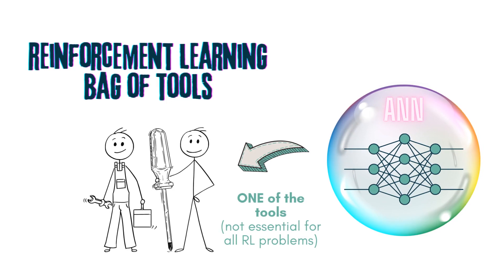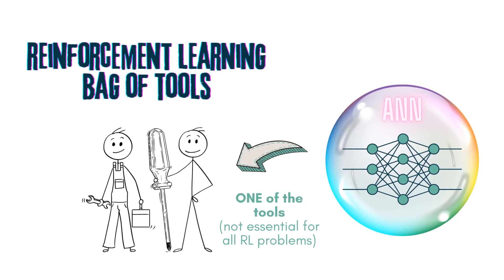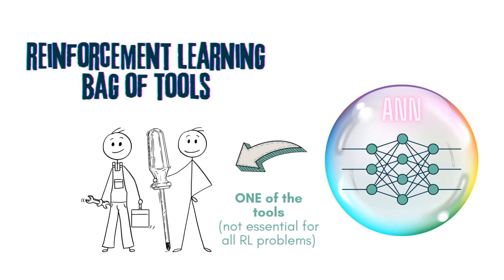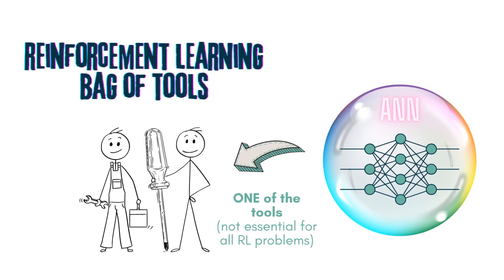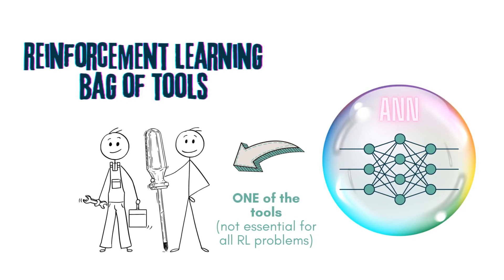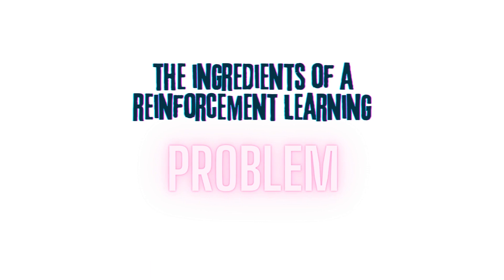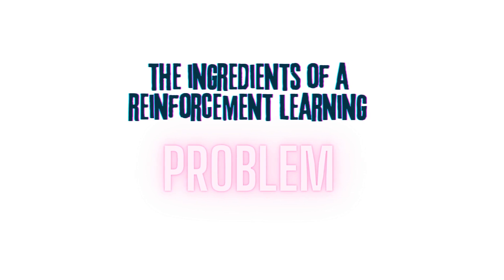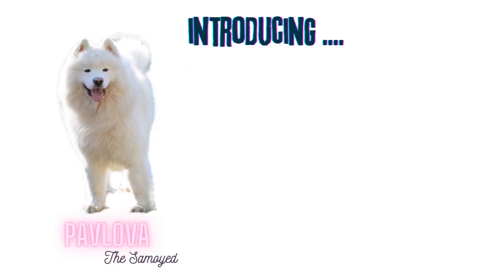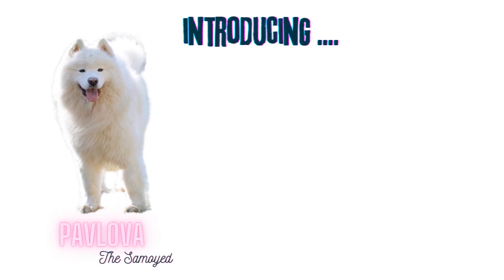As RL problems become more complex, there are techniques which involve using supervised learning and neural networks within the RL framework as a building block of the whole algorithm. Let's start by looking at the types of problems that the RL tools are designed to solve. We need to introduce a few key characters in this example. This is Pavlova, the Samoyed Dog.